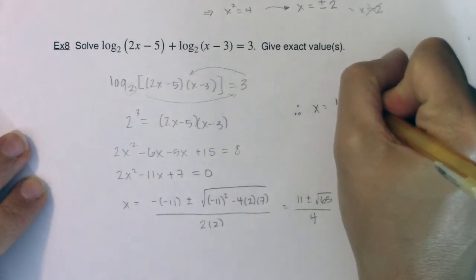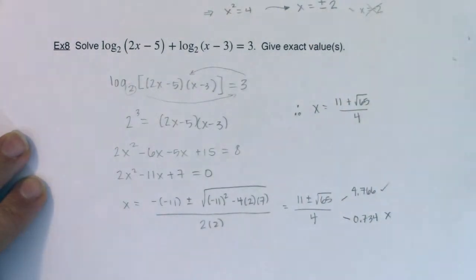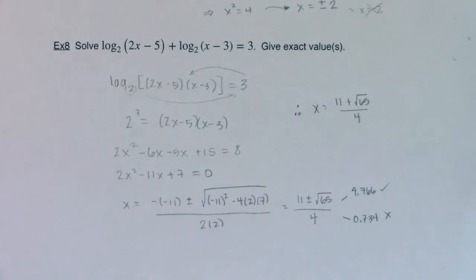...is 11 plus the square root of 65 over 4. When I say exact values, I do not want decimal approximations—I actually want to see the square roots and the e's and whatever other shenanigans you got in there. We're going to keep practicing solving these logarithmic and exponential equations. I'll see you in a bit, bye.